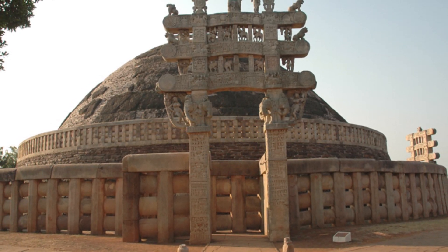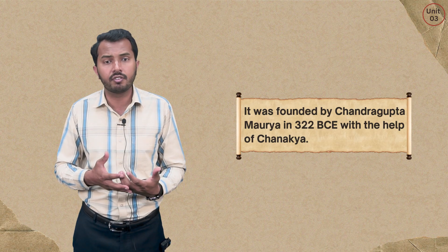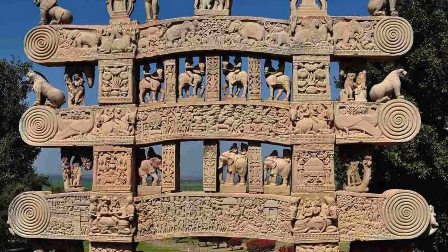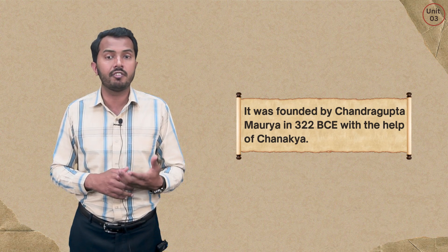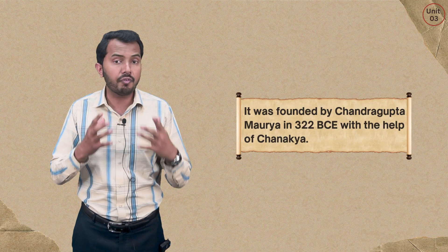Chandragupta Maurya laid down the foundation of this empire with the help of Kotaliyah Chanakya, who was a military advisor to Chandragupta Maurya. He advised him on principles which were deployed to defeat the Nanda dynasty. Chanakya provided inner information and revealed the weaknesses of the Nanda dynasty. This is how the Mauryan Empire was established — formed by Chandragupta Maurya with the help of Kotaliyah Chanakya.